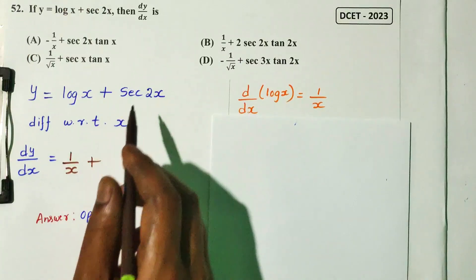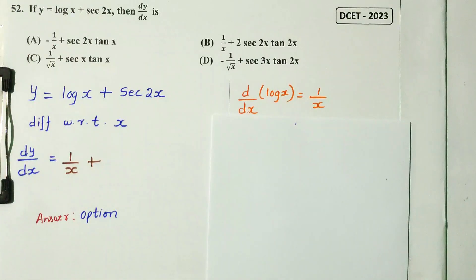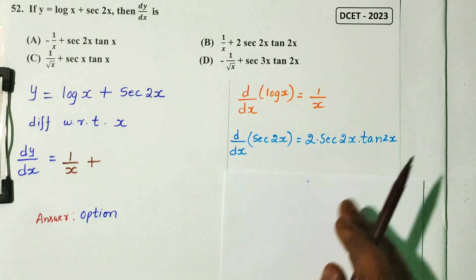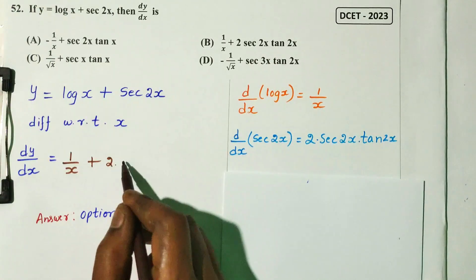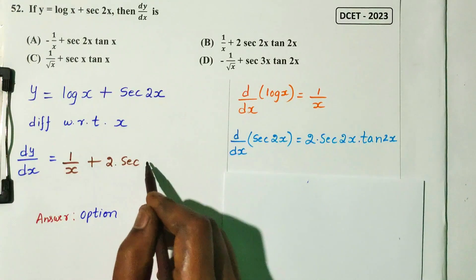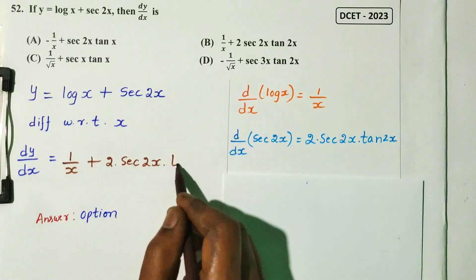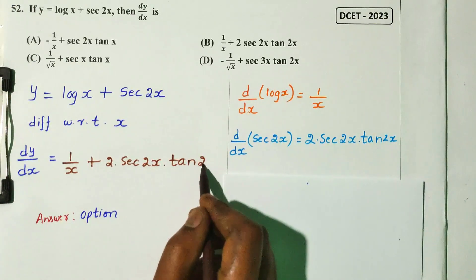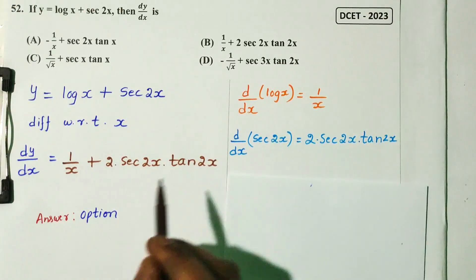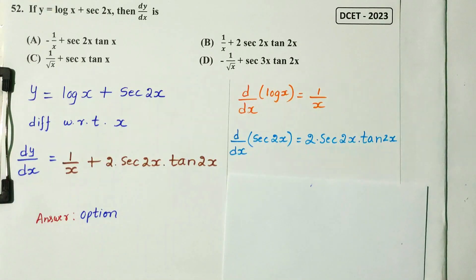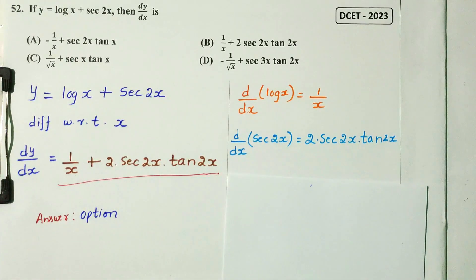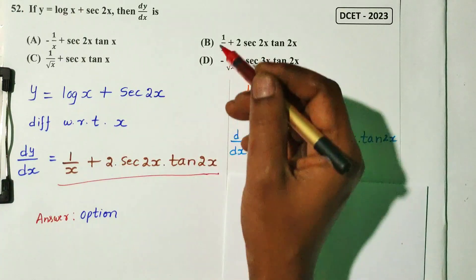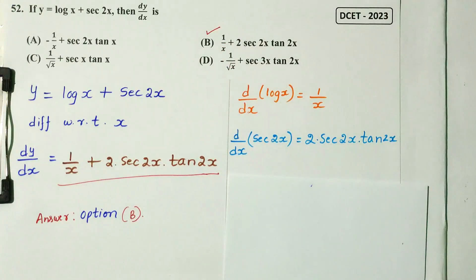For sec(2x), the differentiation gives 2 sec(2x) into tan(2x) directly. So dy/dx = 1/x + 2sec(2x)tan(2x). Option B is the right answer for this DCT 2023 question.